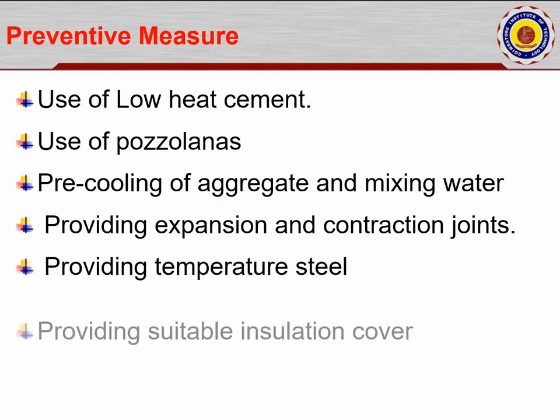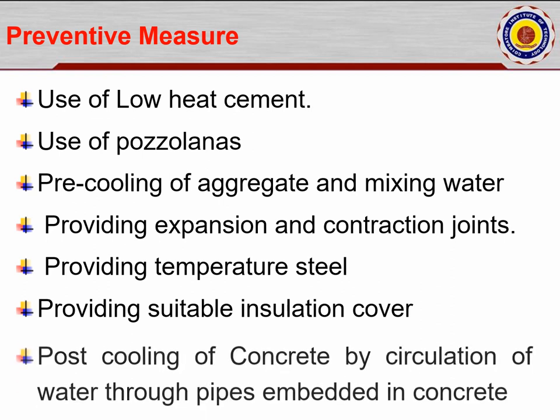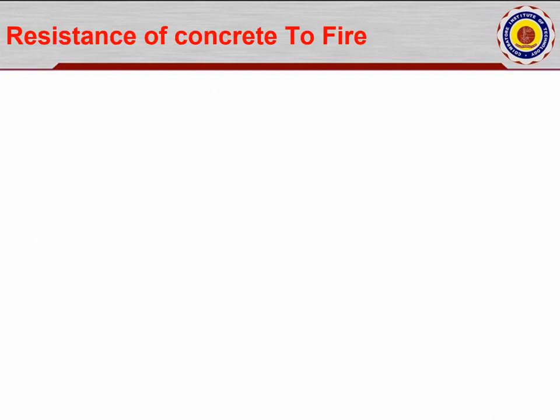Providing temperature steel and suitable insulation cover — such as polythene sheets after concreting — helps protect against drastic temperature changes like rain or heavy heat depending on climatic conditions. Post-cooling of concrete by circulation of water through pipes embedded in the concrete surface is also an effective measure to control thermal effects.